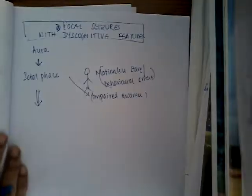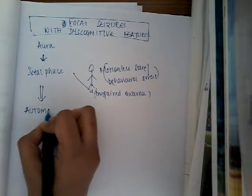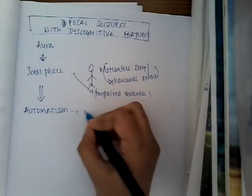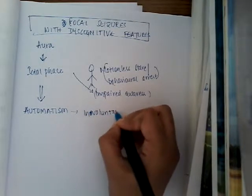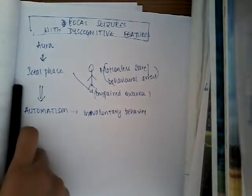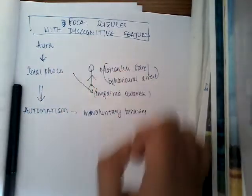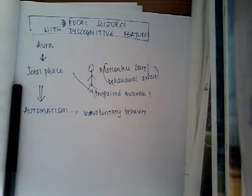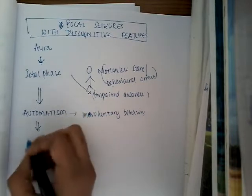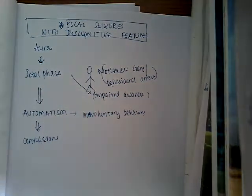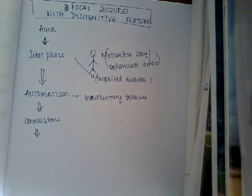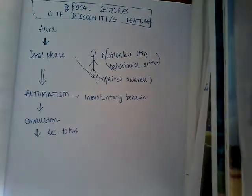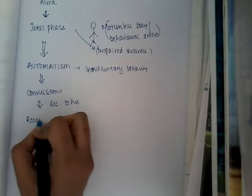After the ictal phase it progresses to automatisms — involuntary behaviors such as a picking movement of the hand, involuntary chewing, lip smacking, swallowing movements, or even emotional expressions. After automatisms there will be convulsions involving at least one part of the body, which last for seconds to hours. Once the convulsions are over, the person recovers consciousness.